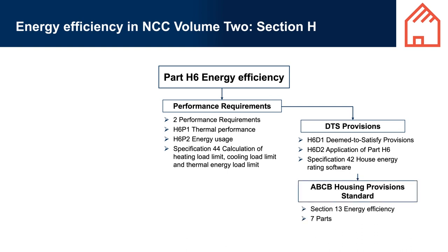Part H6 links to Section 13 of the ABCB Housing Provision Standard for the Elemental Pathway. Section 13 contains seven parts and is discussed in more detail later in this module. It's important to remember that designers don't have to use the DTS provisions — they can develop a performance solution instead, or use a combination of a DTS solution and a performance solution.